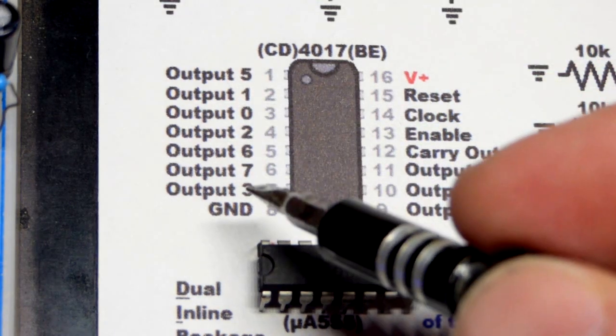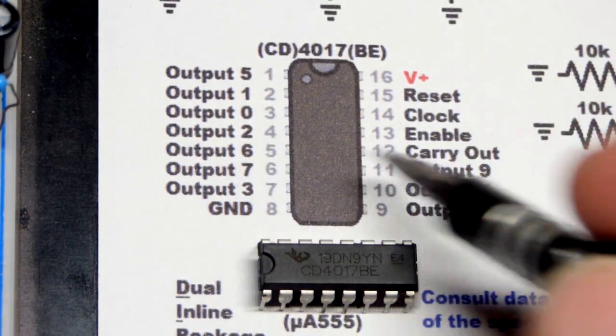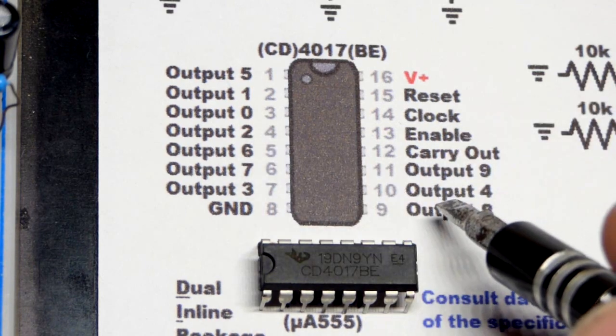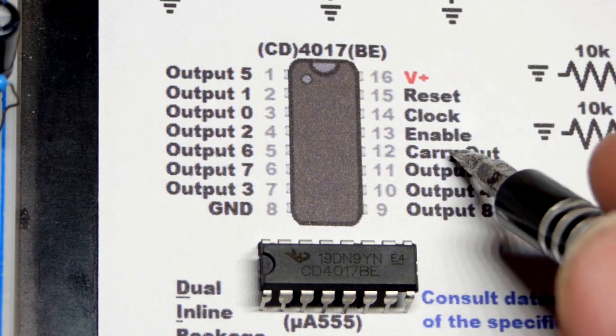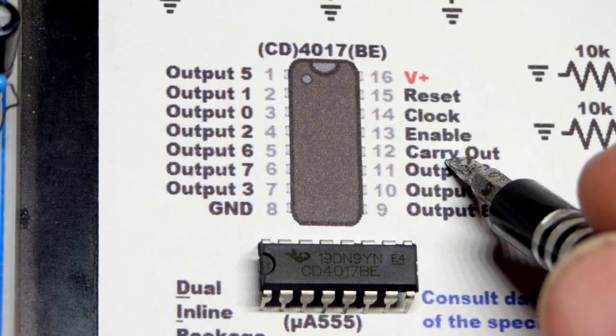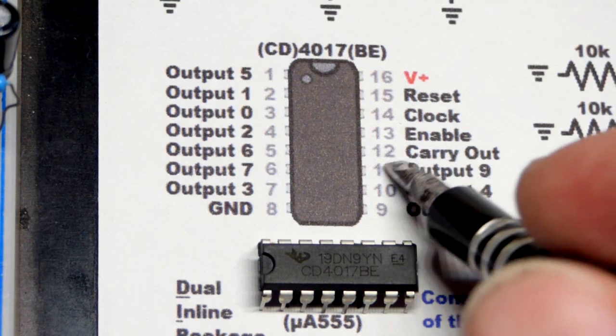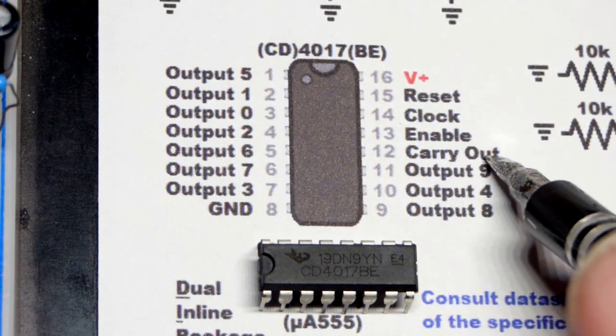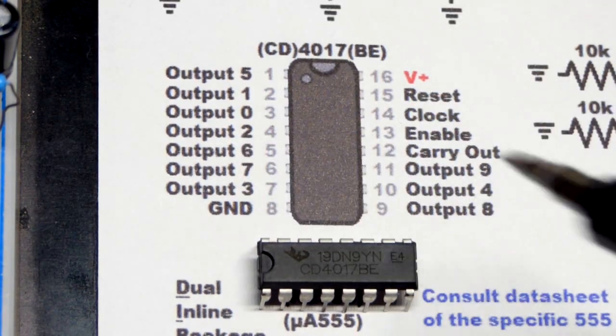But in any case, you can see the part numbers are way out of order. So you've got to consult really carefully with the pin layout, usually on a datasheet. And then we've got our other pins there. Carry out is for giving high and low signals to other circuitry based on where the output is.